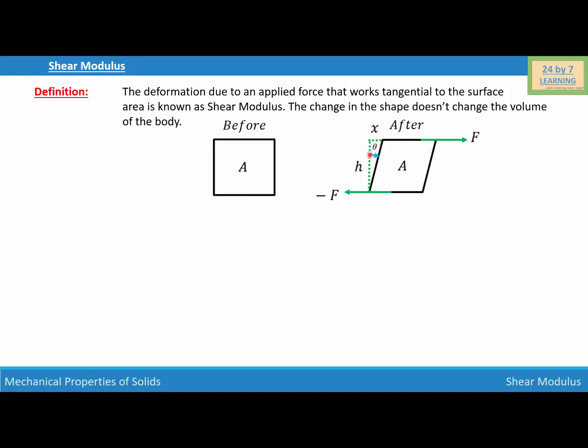So basically we can find the tangent angle of theta. So we can write tan θ is equal to x over h. Now for a small angle, tan θ is equal to θ, and that is equal to x over h.